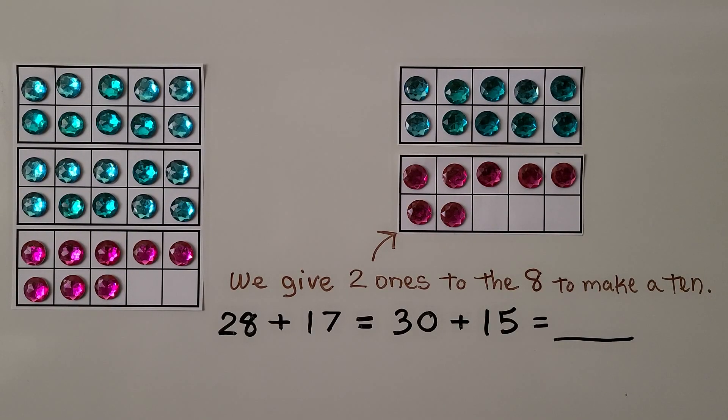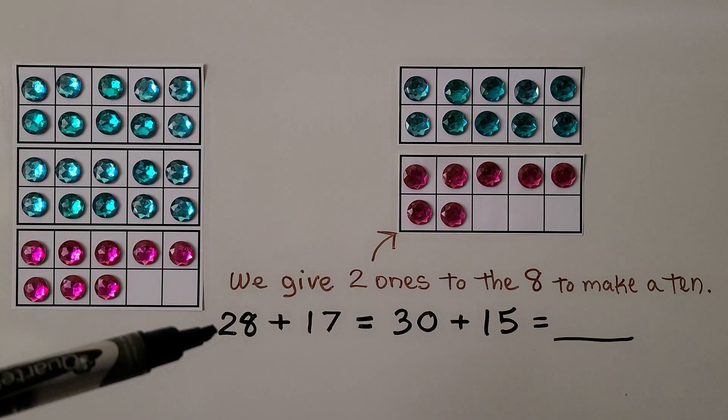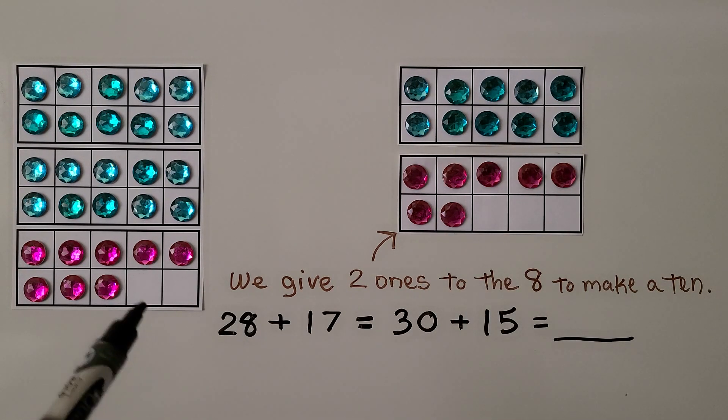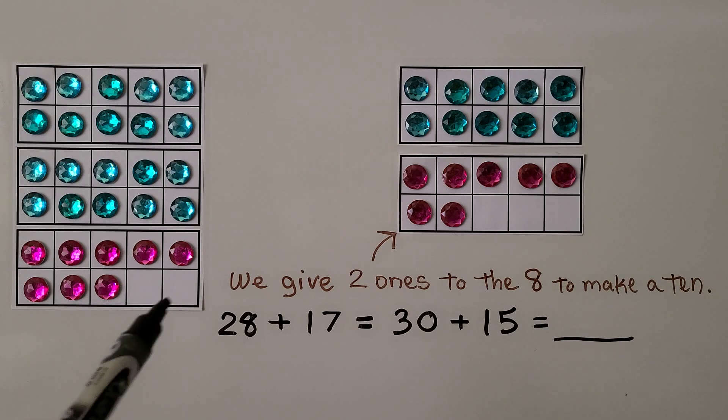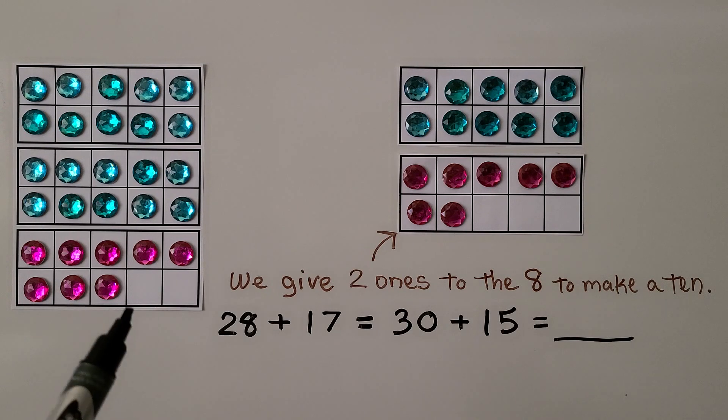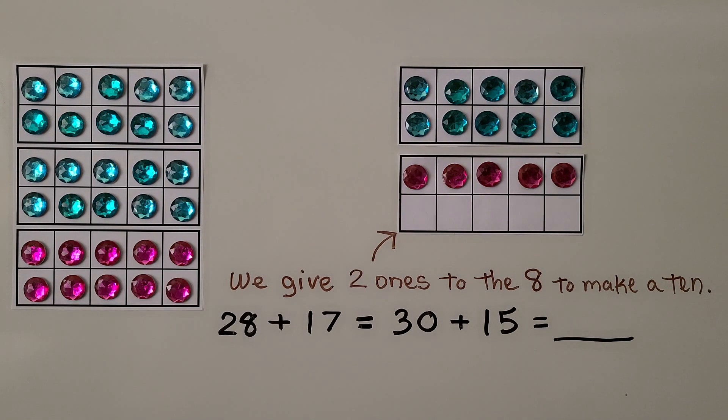We can use ten frames to see what is happening. We have 28 plus 17. That's two tens, eight ones, plus one ten, seven ones. This eight here only needs two more to become a ten. So we can give these two ones to the 28 and make it a 30. Now we have a tens number. It's 30 plus 15. One ten, five ones.